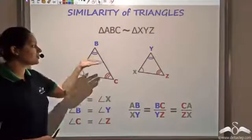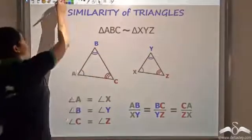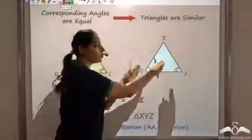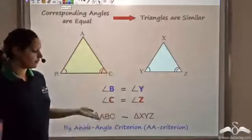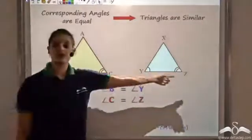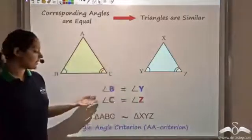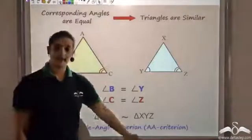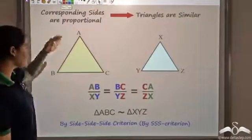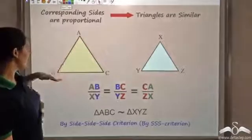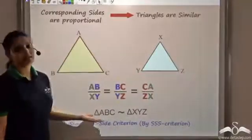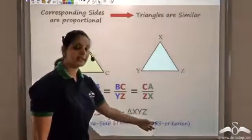Now let us find the sufficient conditions to prove similarity. If two angles of one triangle are equal to two angles of the other triangle, the triangles are similar by the Angle-Angle criterion. Here, angle B equals angle Y and angle C equals angle Z, so the triangles are similar by AA. Similarly, if the corresponding sides are proportional — AB/XY = BC/YZ = CA/ZX — the triangles are similar by the Side-Side-Side criterion.